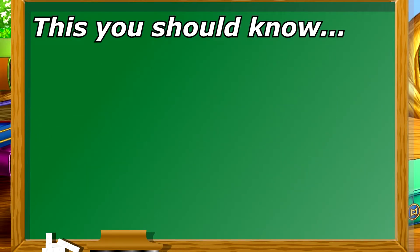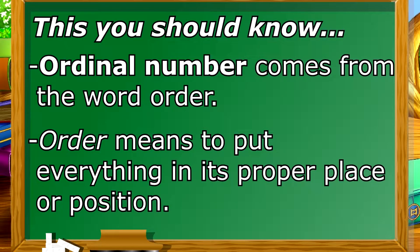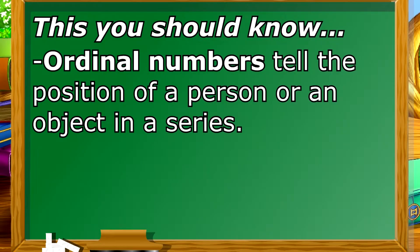This you should know. Ordinal number comes from the word order. Order means to put everything in its proper place or position. Ordinal numbers tell the position of a person or an object in a series.